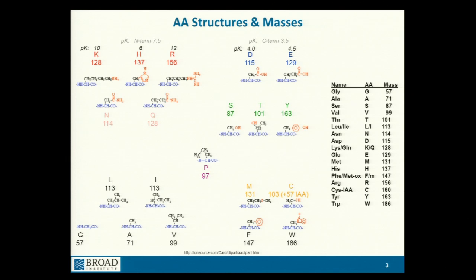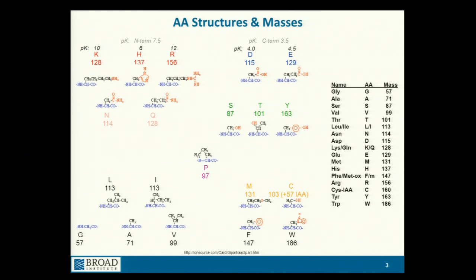From the standpoint of ionization and fragmentation, probably the most important residues are lysine, histidine, and arginine, because they all contain basic side chains that can bear charge. Even amongst those three, it's important to recognize they have different pKas — with arginine having the highest pKa. That will become important in a few slides, because arginine really wants to hold onto that charge much more so than the other charge-bearing residues.